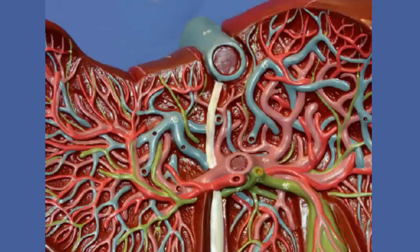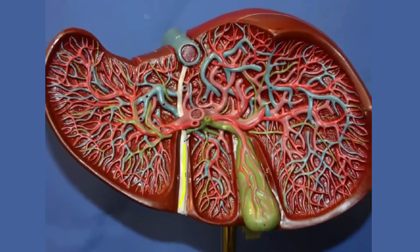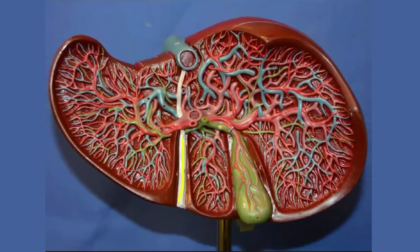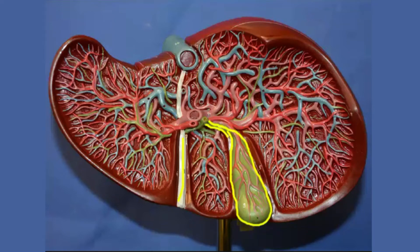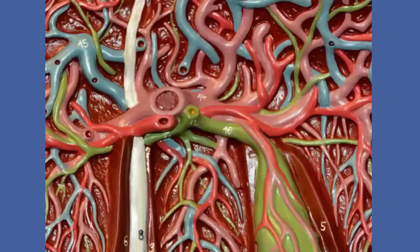So again, the round ligament is there. Here is the gallbladder, and it is underneath the liver. Like the round ligament, it is not within the liver — it is on the undersurface of the liver. We'll learn about the gallbladder later. Right over here is a close-up of the blood vessels that supply blood to the liver.